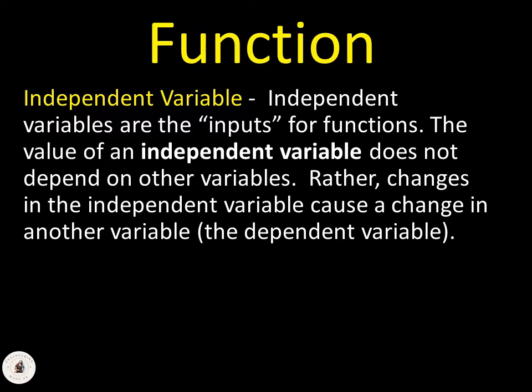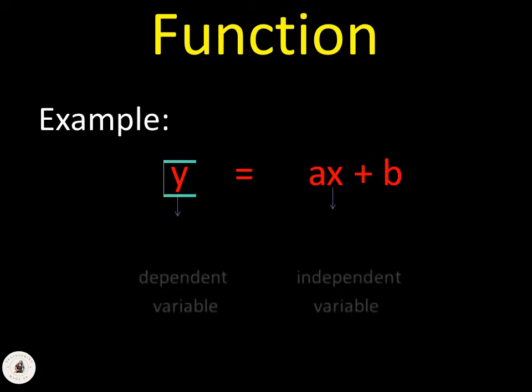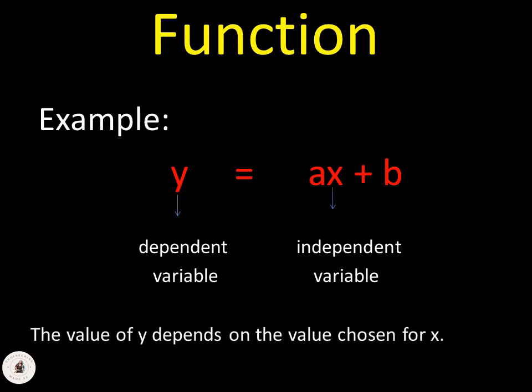Changes in the independent variable cause a change in another variable. For example, if we have y = ax + b, the dependent variable is y and the independent variable is x. The value of y depends on the value chosen for x. Note that a and b here are constants.